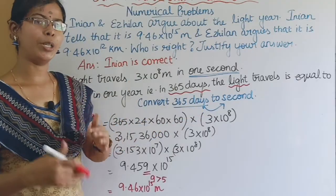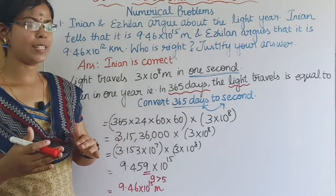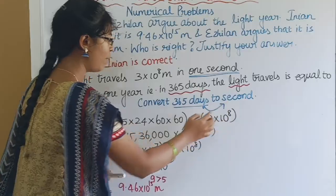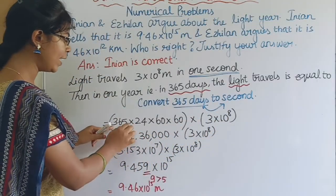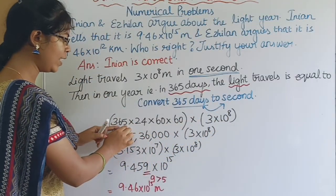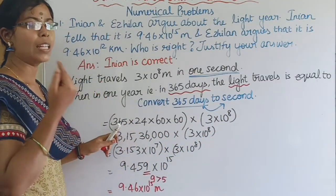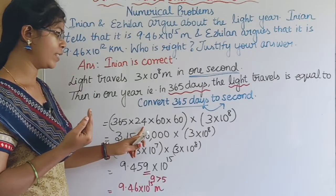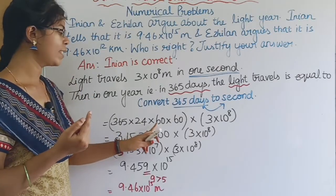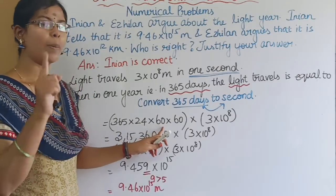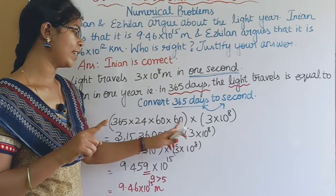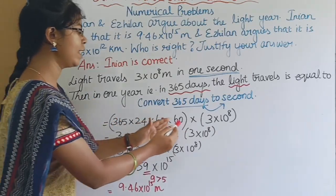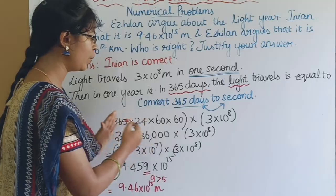We convert 1 year into seconds: 365 days, each day has 24 hours, 1 hour is 60 minutes, and 1 minute is 60 seconds. So 1 year equals 365 × 24 × 60 × 60 seconds.